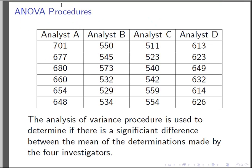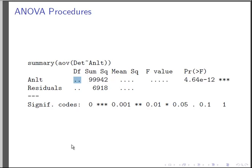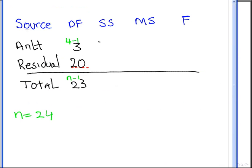The next thing is the sums of squares. So we are actually given these values here: 99942 and the other one is 6918. If we were to add those together, we would get the total sum of squares. So that is 0, 6, 8, carry the 1, 6, carry the 1. So 16860.